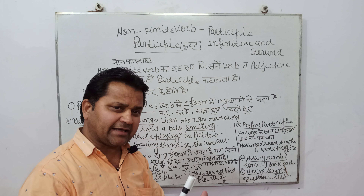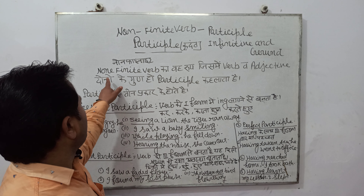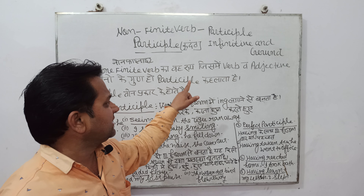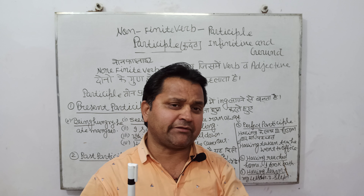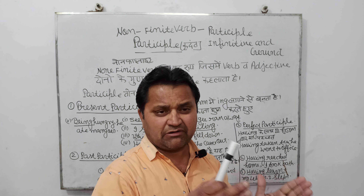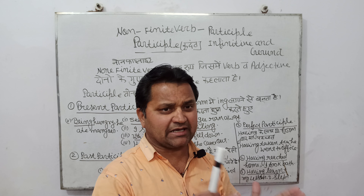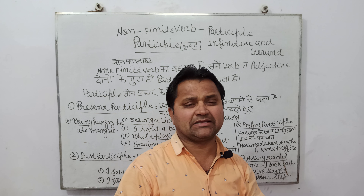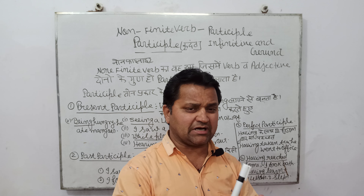Dekh lete hain sabse pehle participle ki paribhasha, definition dekh lete hain — participle hota kya hai? Non-finite verb ka woh roop jisme verb aur adjective dono ke gun ho, participle kehlata hai. Artha, kriya ka woh roop jo adjective ka bhi karya kare, participle kehlata hai. Aur participle ko Hindi mein kehte hain करदंत.